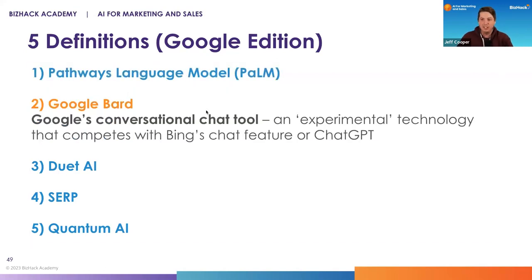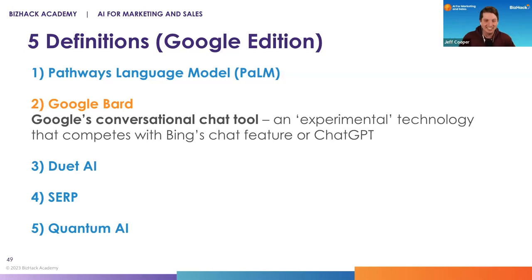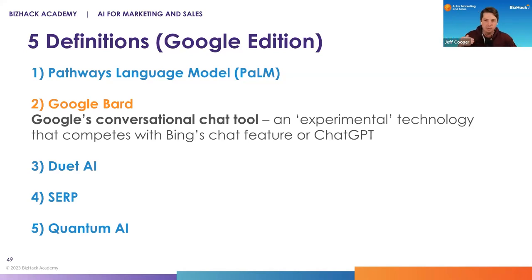Google Bard is the ChatGPT competitor, or Bing's chat feature equivalent. Right now, Google is being very clear that this is experimental — that's a little bit of marketing and liability protection. It's an experimental technology like all of this technology is. You can actually use this right now if you go to bard.google.com. It works and functions very similar to ChatGPT, but it's hooked into Google's search engine. It's also multimodal right now, so if you ask it for ideas for dinner, it will give you ideas and pictures of those dinner plates. It's evolving pretty quickly — I'd encourage you to check it out.